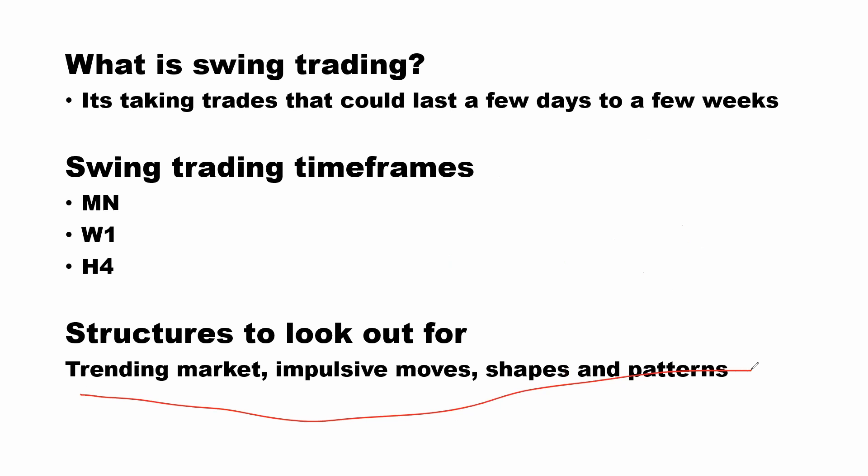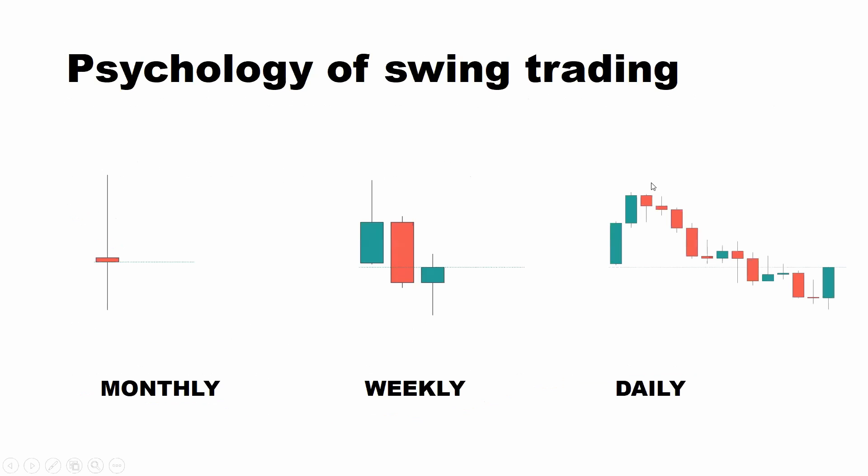These are the structures to look out for as a swinger — and you look for them in weekly. Remember, weekly gives you the structure you're going to trade, the reason for trading. Monthly gives direction, H4 gives entry, and you can refine in H1. If you want sniper entries, you can go to M30. That's all for the structures a swing trader needs.